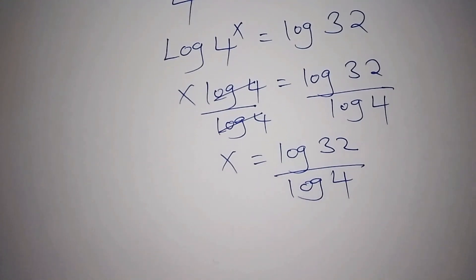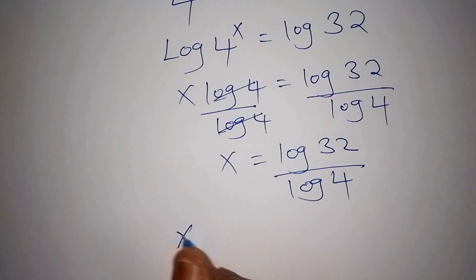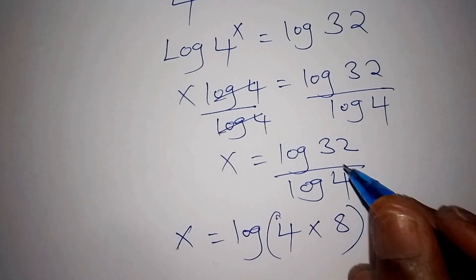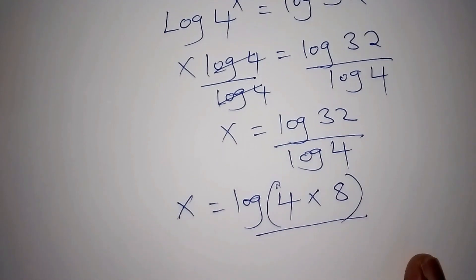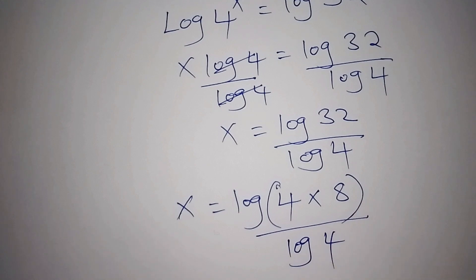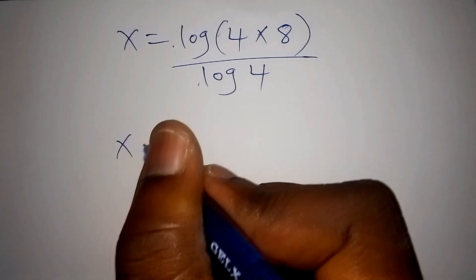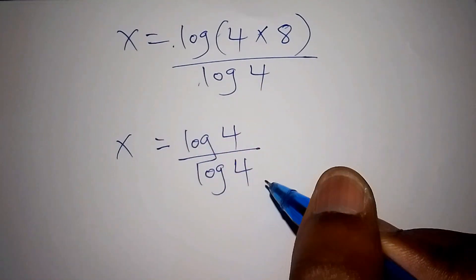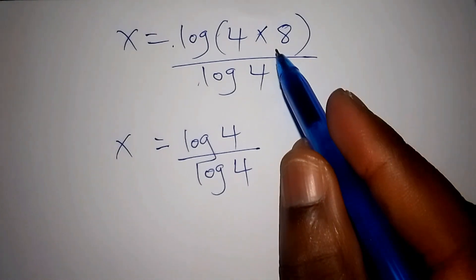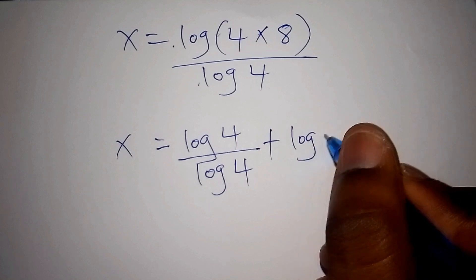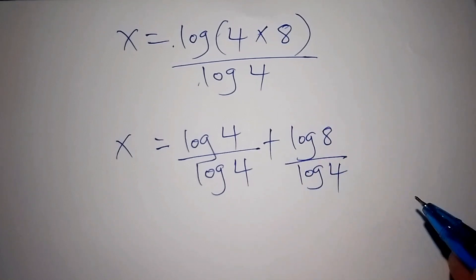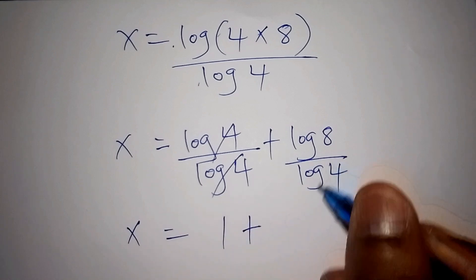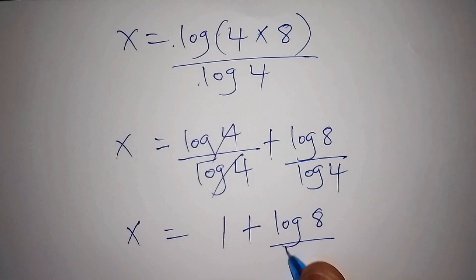Our answer does not stop there — we still proceed. We can factorize the log of 32 by saying that x is equals to the log of 4 multiplied by 8 all over the log of 4, because 4 multiplied by 8 gives us 32. We write it separately, picking the log of 4 divided by the log of 4. According to the laws of logarithms, the multiplication sign shall change to addition. So we have log 4 over log 4 plus the log of 8 all over the log of 4. The log of 4 and log of 4 cancel, so we have 1 plus the log of 8 all over the log of 4.